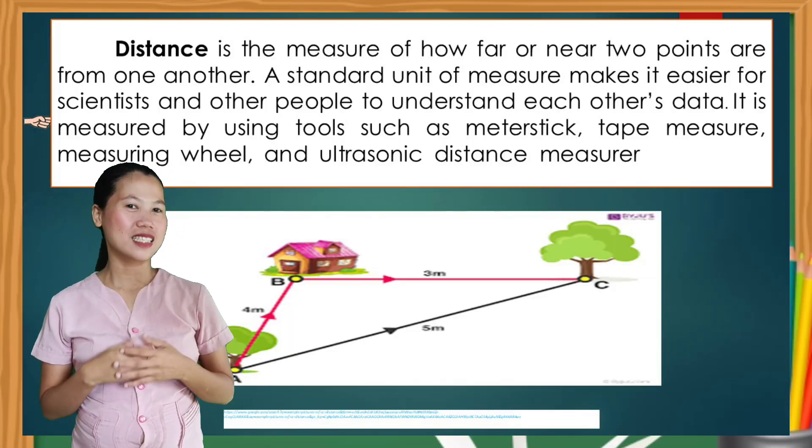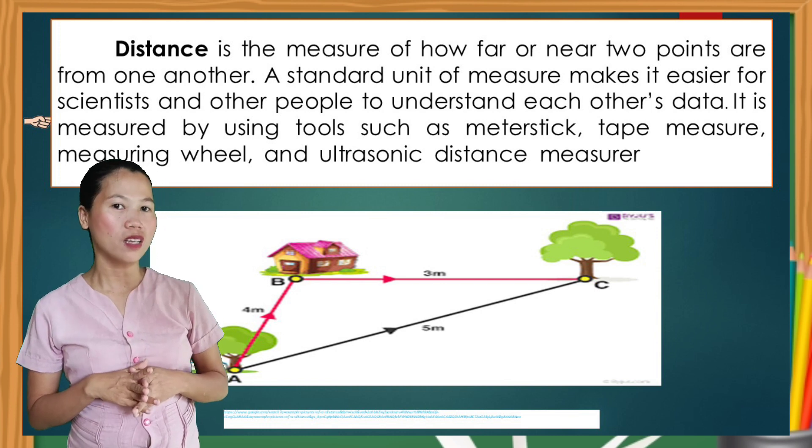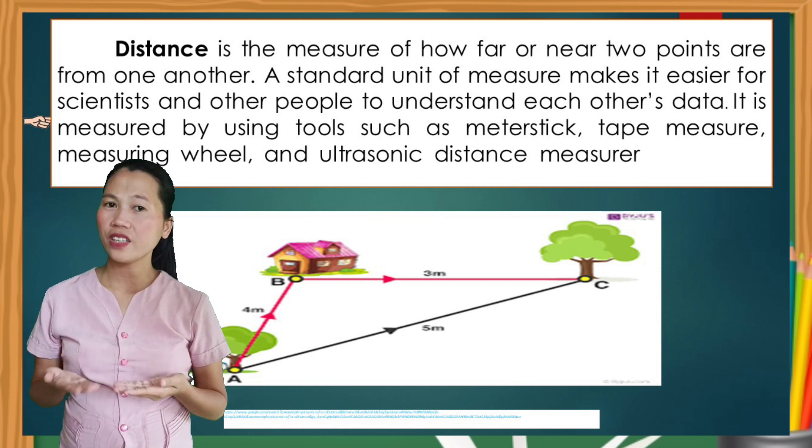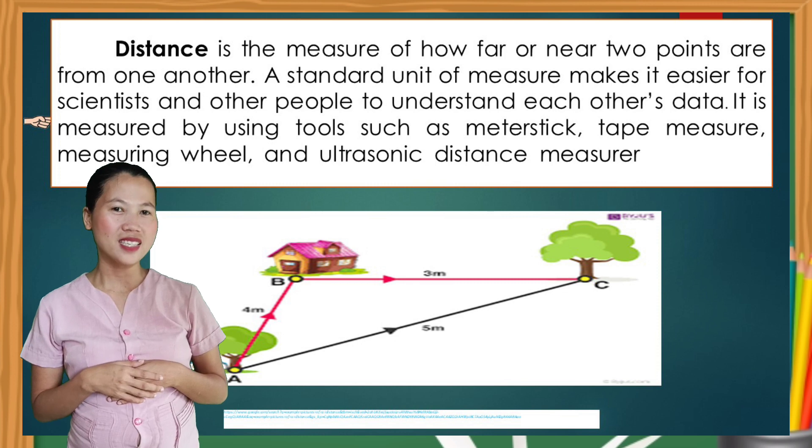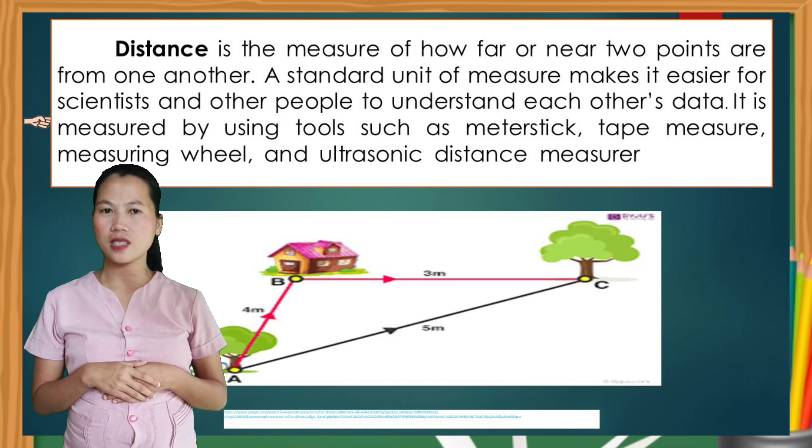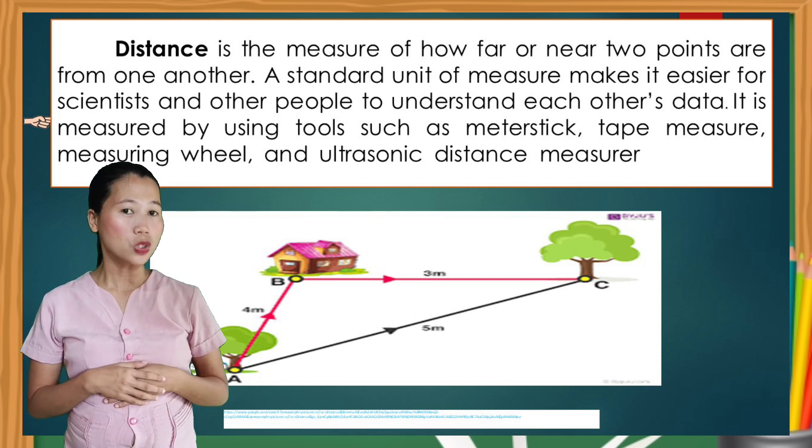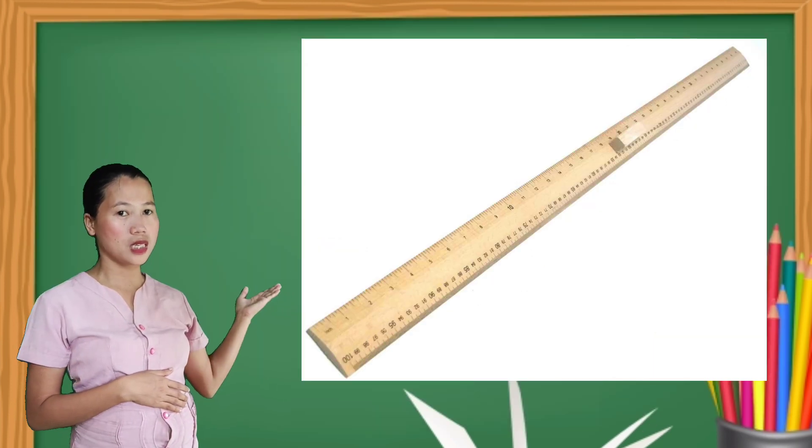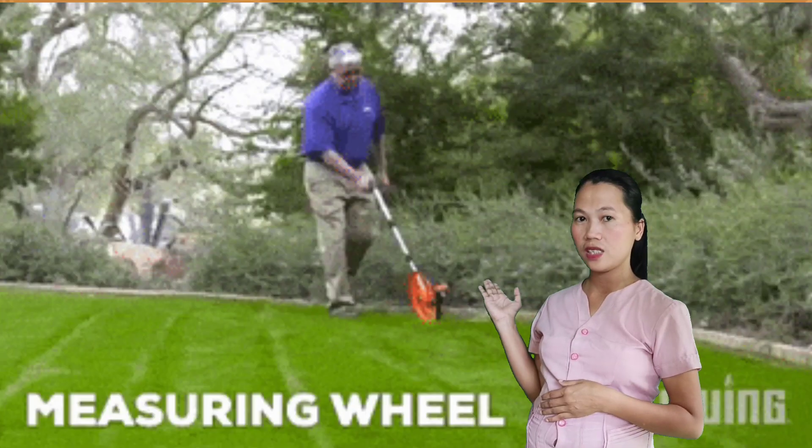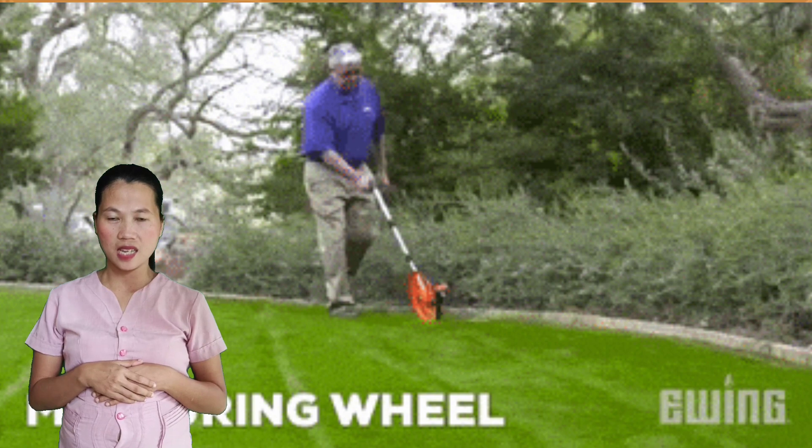Distance is the measure of how far or near two points are from one another. A standard unit of measure makes it easier for scientists and other people to understand each other's data. It is measured by using tools such as meter stick, tape measure, measuring wheel, and ultrasonic distance measure.